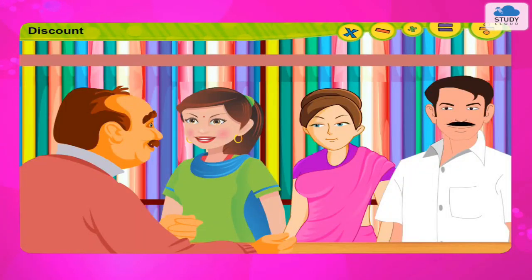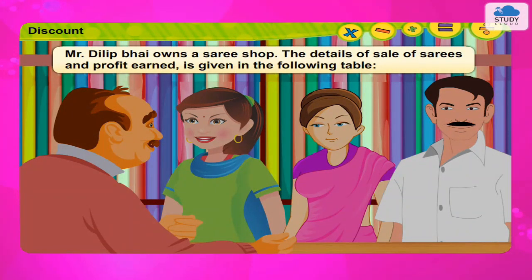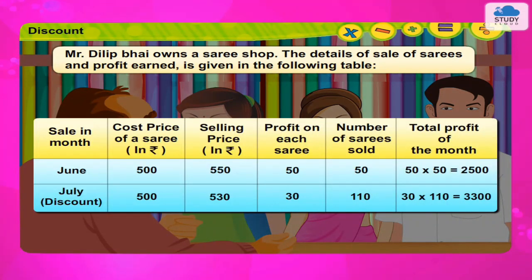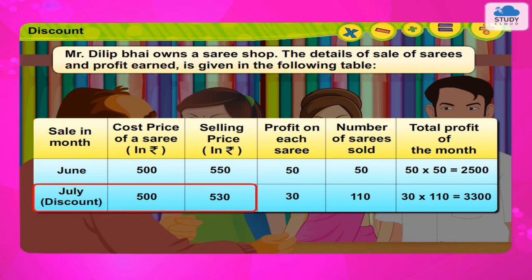Discount. Mr. Dilibbhai owns a saree shop. The details of the sale of sarees and profit earned is given in the following table. From the table, it is clear that a discount is given on each saree during the sale in July. The profit on each saree is less, but the total sarees sold are more. Hence, overall, there is more income for Mr. Dilibbhai.